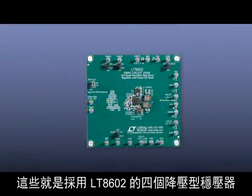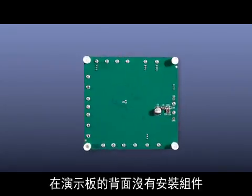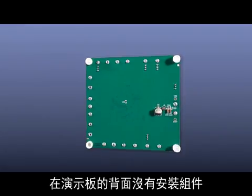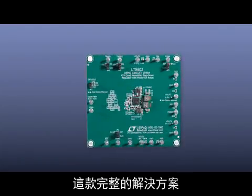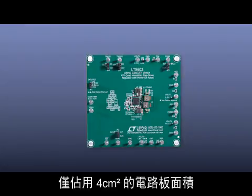These are all the components necessary for four buck regulators using the LT8602. There are no components on the back side of the board. This complete solution occupies only four square centimeters of board area.